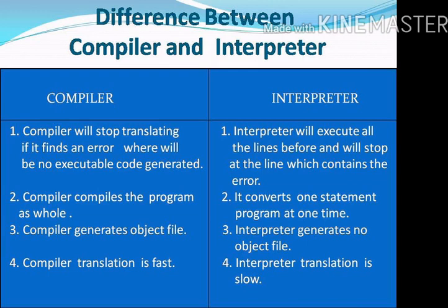A compiler generates an object file, whereas an interpreter generates no object file. Compiler translation is fast, but interpreter translation is slow.